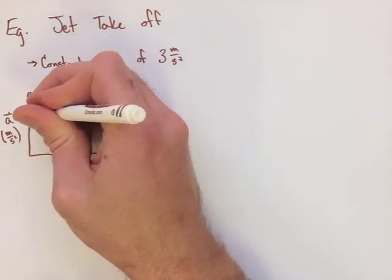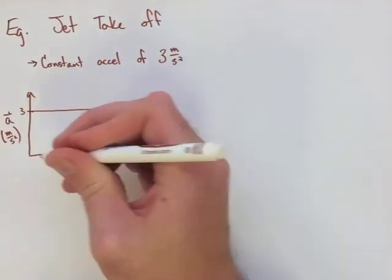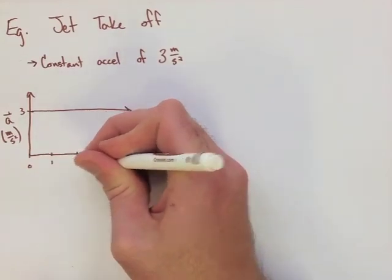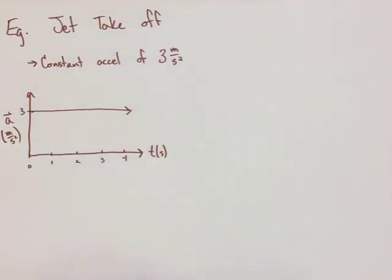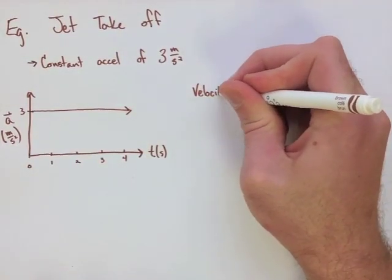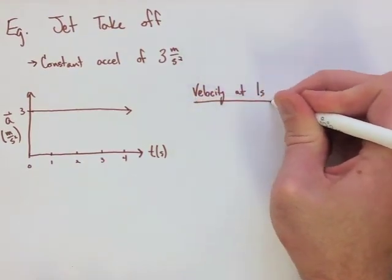We're going to have a straight line that's horizontal for our constant acceleration. We need to then identify our 1 second, 2 second, 3 second, and 4 seconds on our x-axis. To find our velocity, we need to break these into little squares.